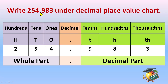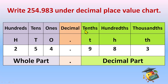You'll start writing from the decimal point. Before the decimal you'll write 254, and after the decimal you'll write 983. So we have written this number under the decimal place value chart. Remember: 1s, 10s, 100s before the decimal; after the decimal we start with tenths, hundredths, thousandths.